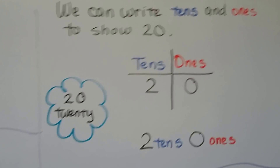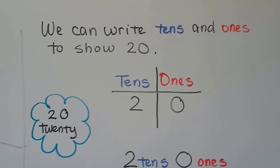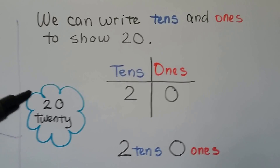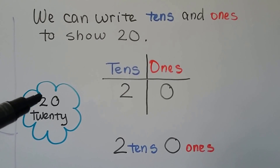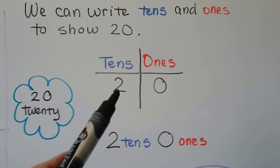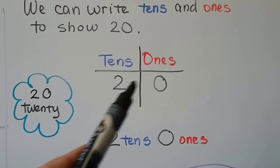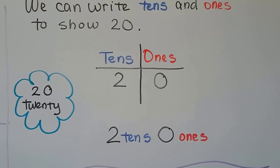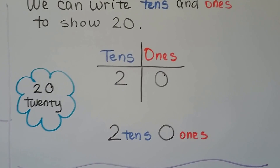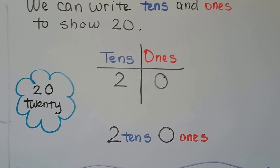We can write tens and ones to show twenty. We have two tens and zero ones. This is the tens place. There are two tens and zero ones. Two tens and zero ones makes twenty.